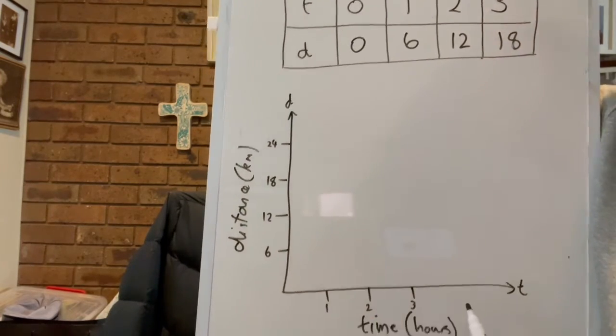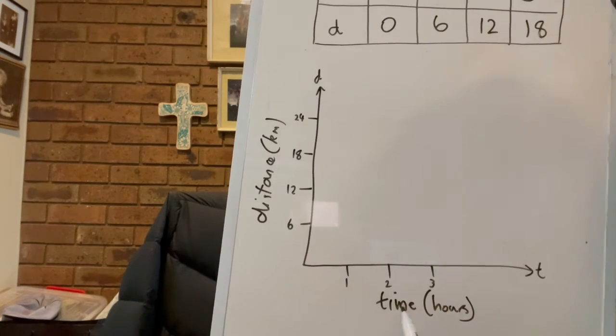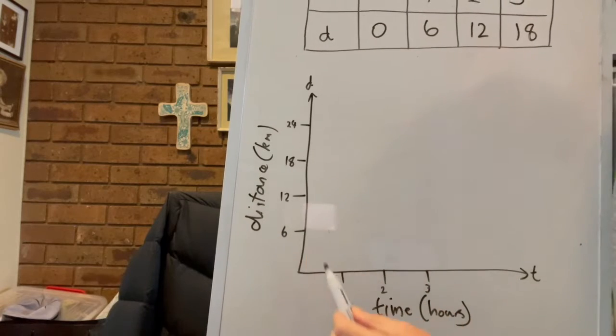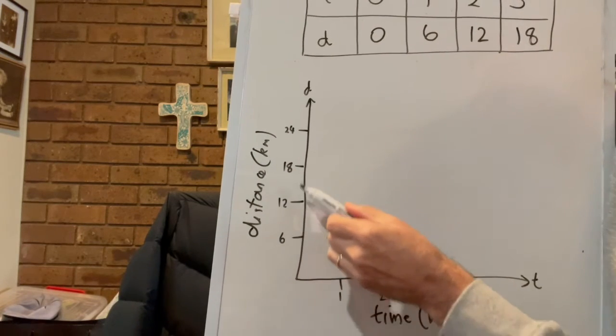And we're going to have on the bottom our t-axis or x-axis here for time. So time in hours, distance in kilometers. One, two, three hours here and up the side six, 12, 18. I'm going up to 24 kilometers here.